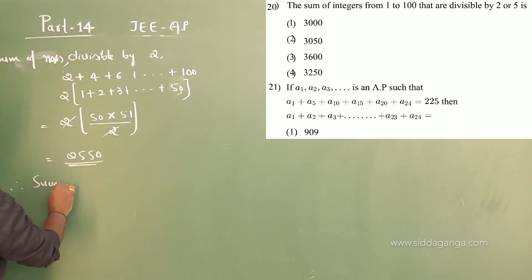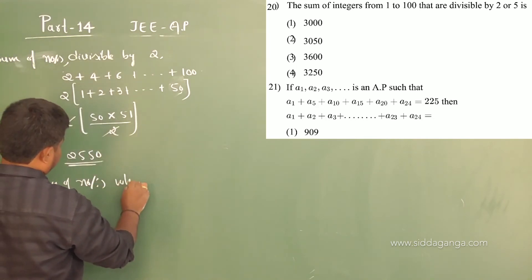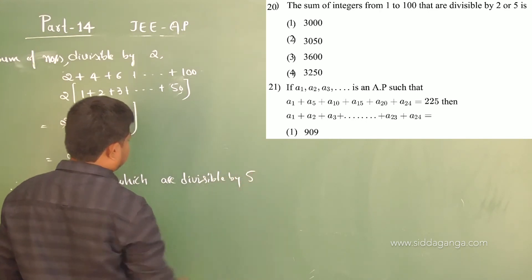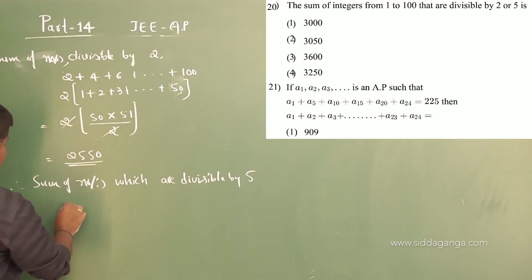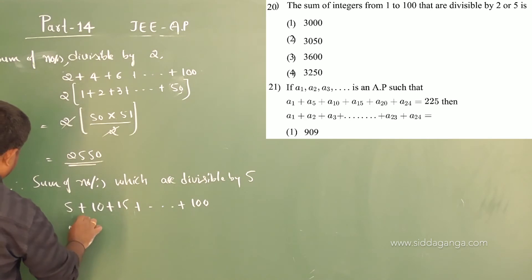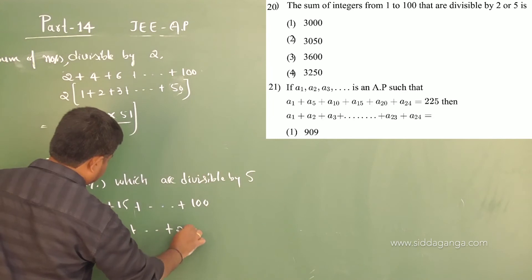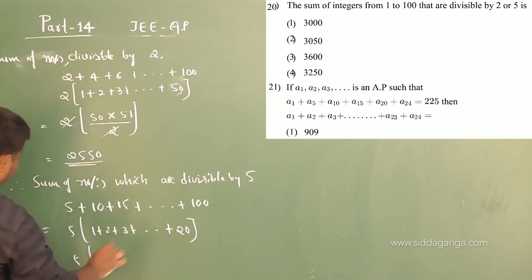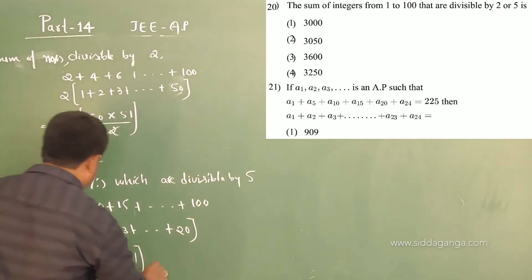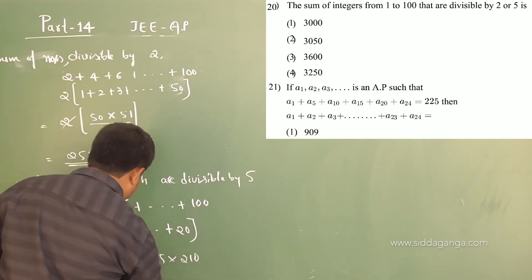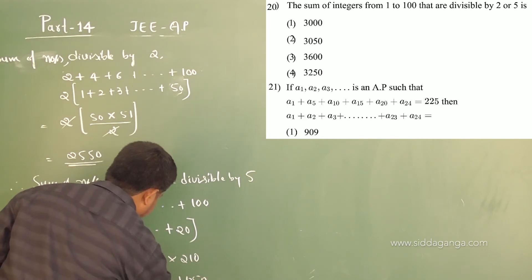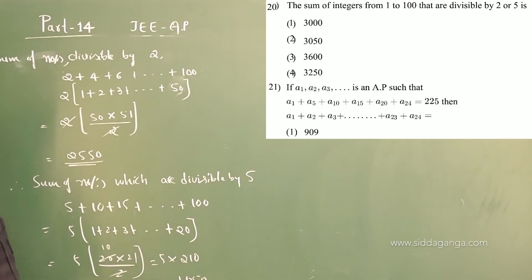Now let me find the sum of numbers divisible by 5: that is 5 plus 10 plus 15 plus ... Taking 5 outside: 5 times the sum of first 20 natural numbers equals 5 times (20 times 21 by 2) equals 5 times 210 equals 1,050. So 1,050 is the sum of numbers divisible by 5.